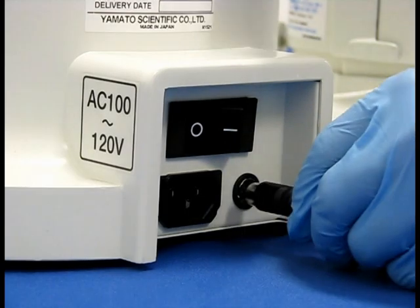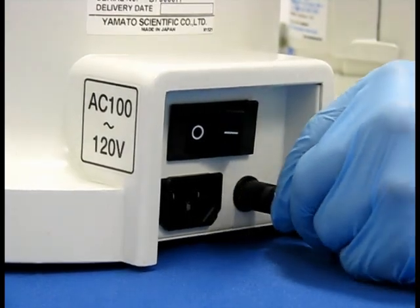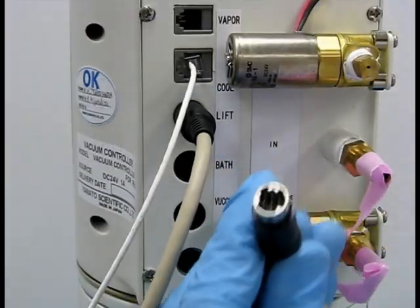Take the bath harness and connect one end to the back of the water bath and the other end to the bath terminal of the vacuum regulator.